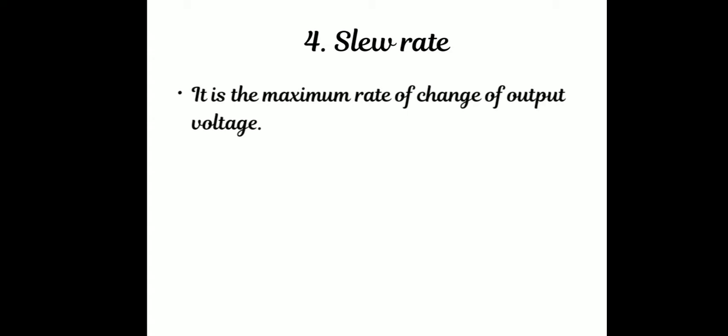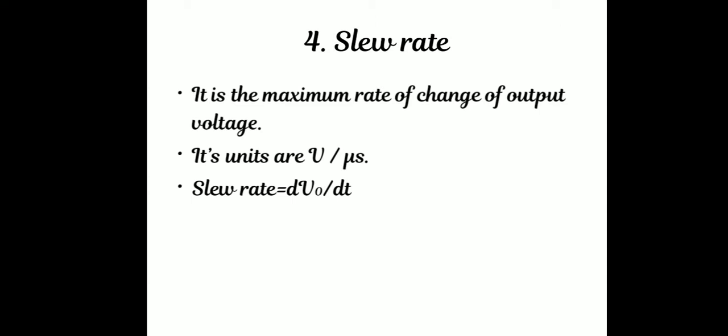Next characteristic is Slew Rate. The slew rate is the maximum rate of change of output voltage. It is measured in volts per microsecond. The formula is dV0 by dt, meaning the output voltage changes very fast.